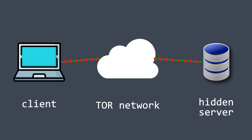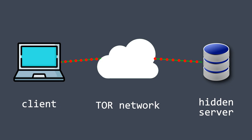In the case of hidden services, both the client and the server meet inside the Tor network, rather than the client connecting directly to the server. These circuits with red dots are not direct connections but Tor circuits that consist of intermediate nodes which transfer data via onion routing. If you are not familiar with how this works, check out the previous video — the link is in the description box below.